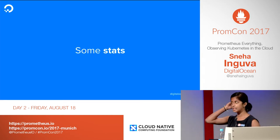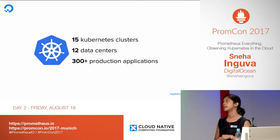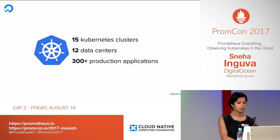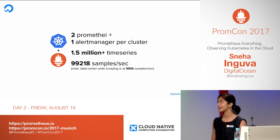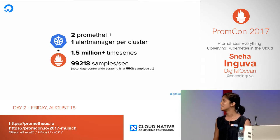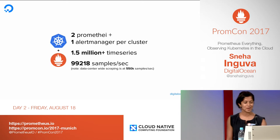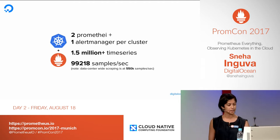Before I delve into exactly what we've done, I just wanted to share some stats. We currently have 15 Kubernetes clusters in 12 data centers located all around the world. We have more than 300 production applications in them. Generally we have two Prometheus and an AlertManager per cluster. We have a million and a half time series in aggregate, and we're scraping about 100,000 samples per second, also an aggregate stat.